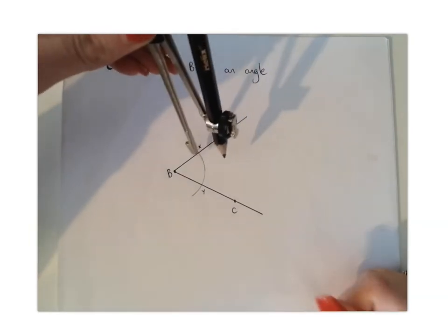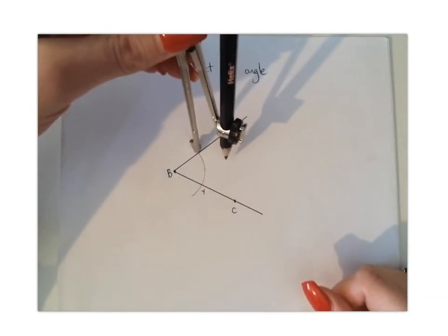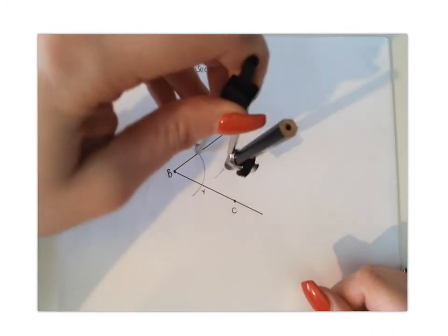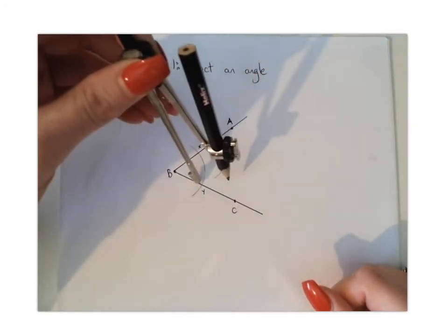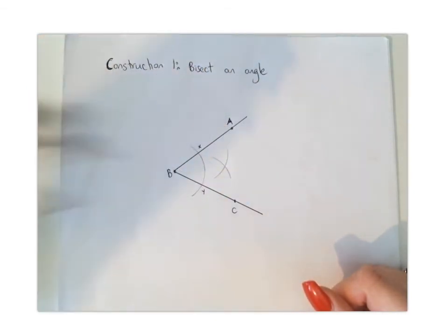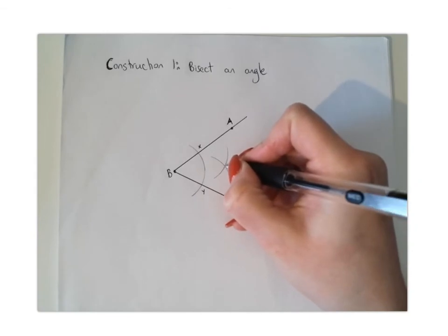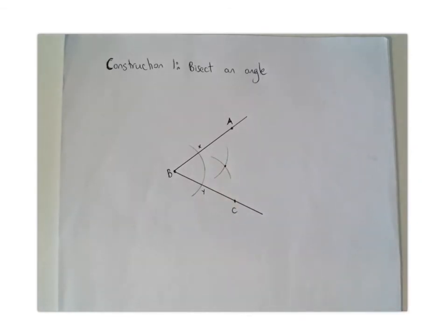We're going to place our compass again at the same width at our X point and draw another arc, and we're going to do the same thing at Y. Place our compass at Y, draw another arc, and where those two lines overlap we're going to mark that as our point of intersection.